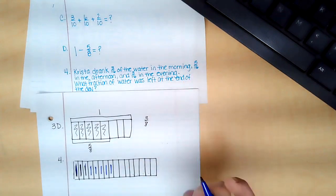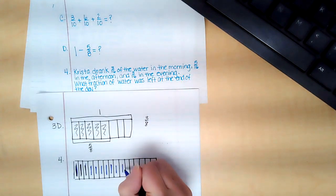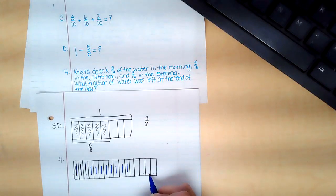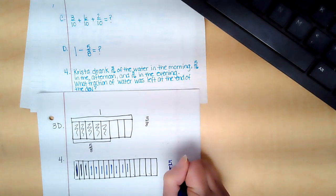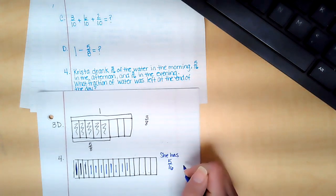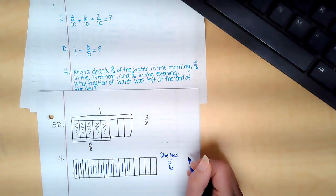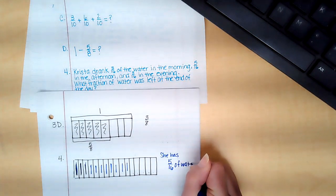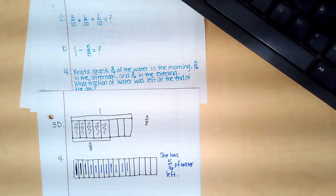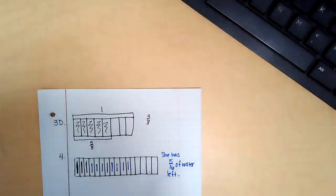And then three sixteenths in the evening, one, two, three. And then the question says what fraction of water was left at the end of the day? Well, let's see how many sixteenths we have left. One, two, three, four, five. So she has five sixteenths left. She has five sixteenths of water left at the end of the day.